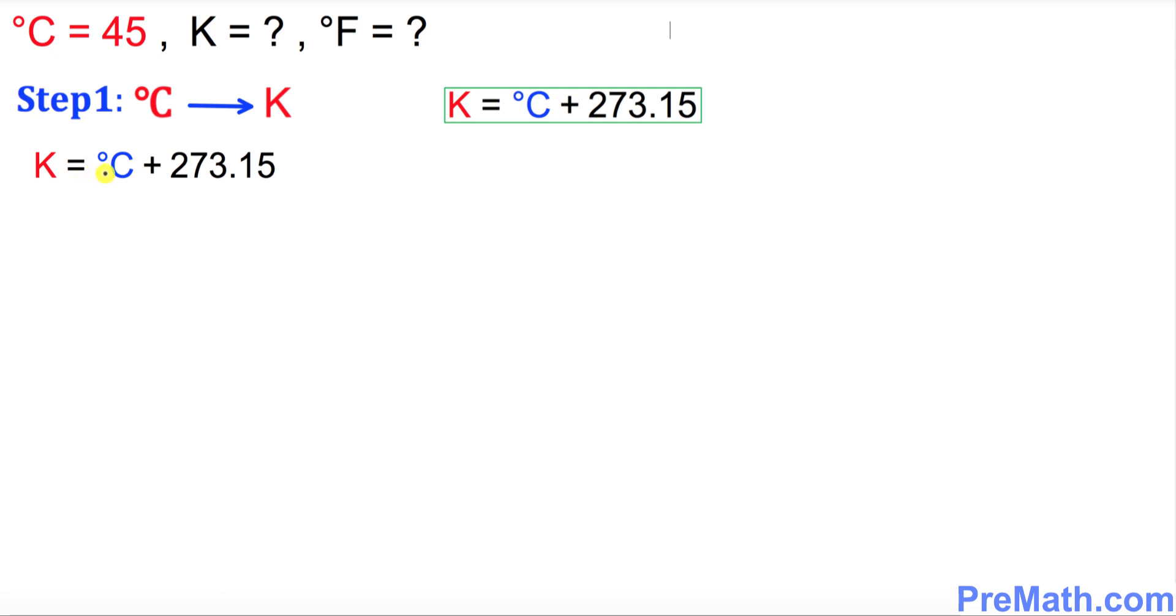Let's go ahead and apply the values for C in this formula. So K equals C is 45, as you can see, I'm going to put down 45 plus 273.15, so if you simplify that's going to give you 318.15 as our K value.